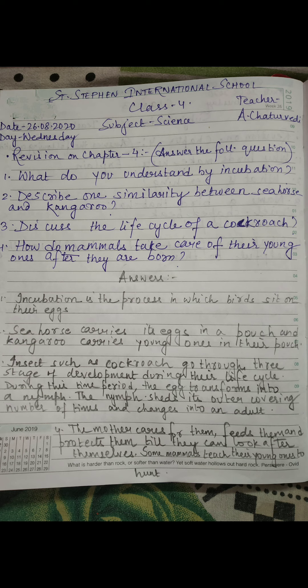There is a pouch in their stomach area and they carry their children. Now, a kangaroo is a mammal so it carries a young one, while a seahorse carries eggs in its pouch. The similarity is that both carry their children in their pouch.